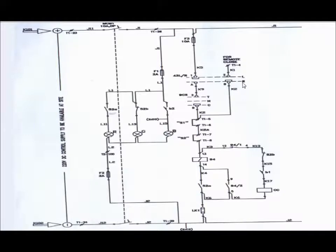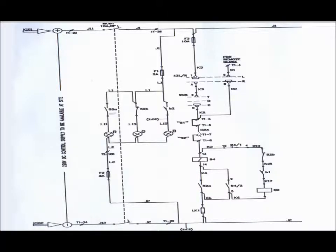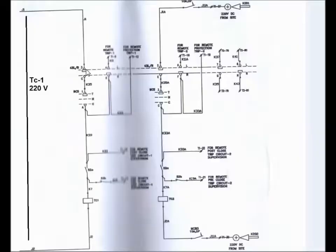For remote closing operation, the local-remote selector switch must be in remote position, and the contact is taken at terminals 2 and B. If we give the control pulse from the remote control and relay panel, the pulse will come from terminal 4, through K2, via the interlocking shorting position, to the closing coil. This is the complete closing operation of the circuit breaker.